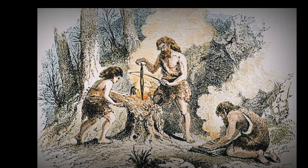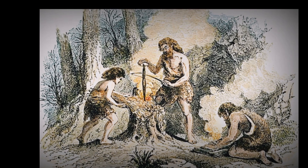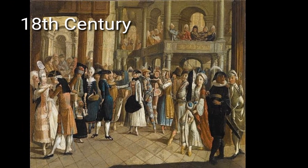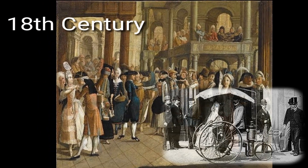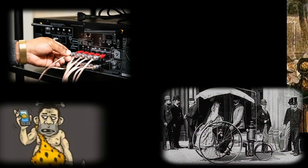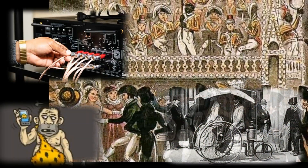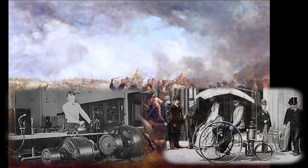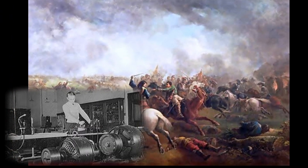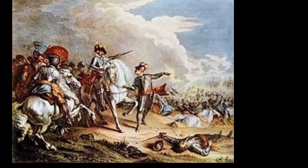Gradually, different things started to be invented, but the main era of technology and invention came in the 18th century. When the industrial revolution started, machines got invented, and various types of development and production began. The industrial revolution began in Great Britain, and many of the technological innovations were of British origin.